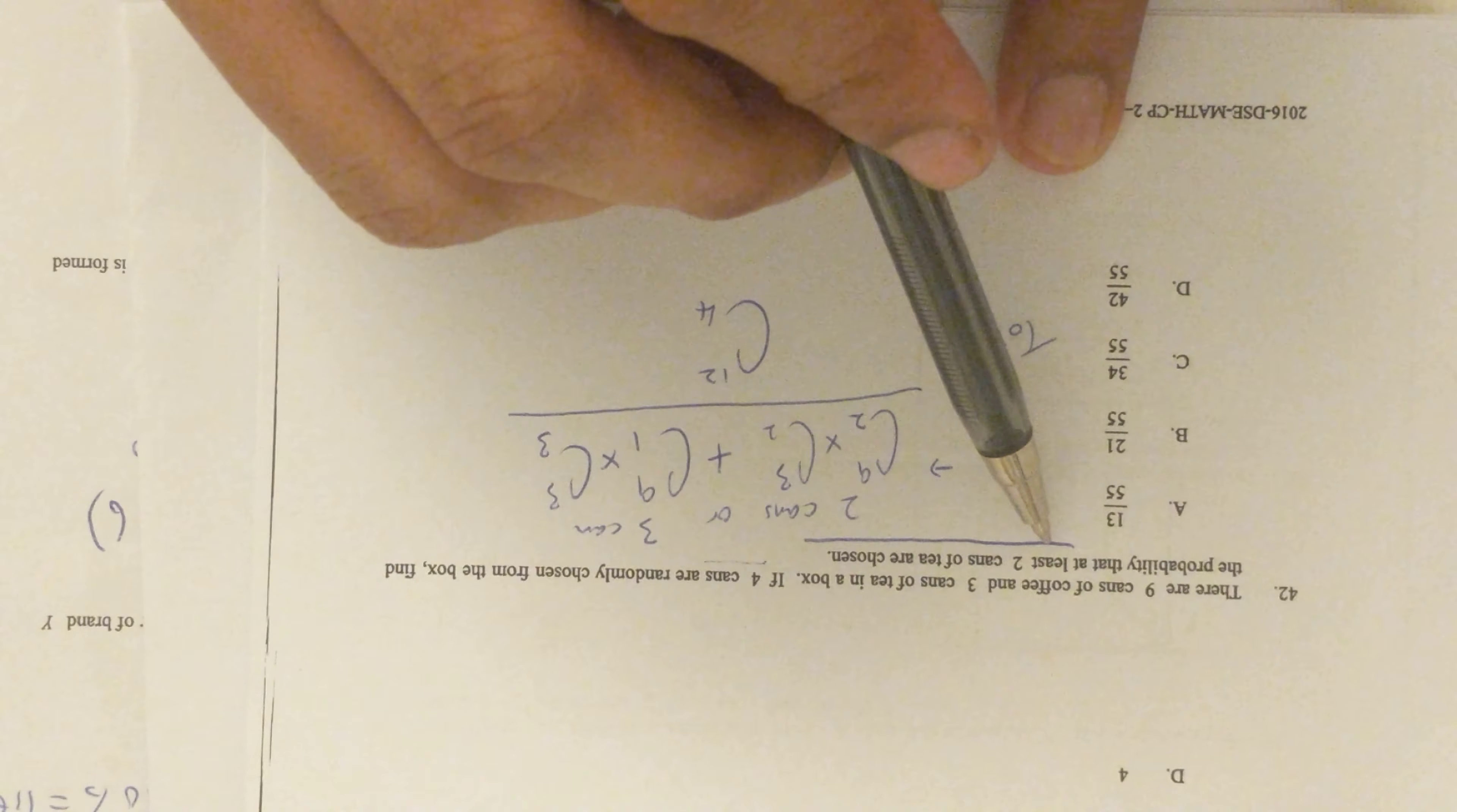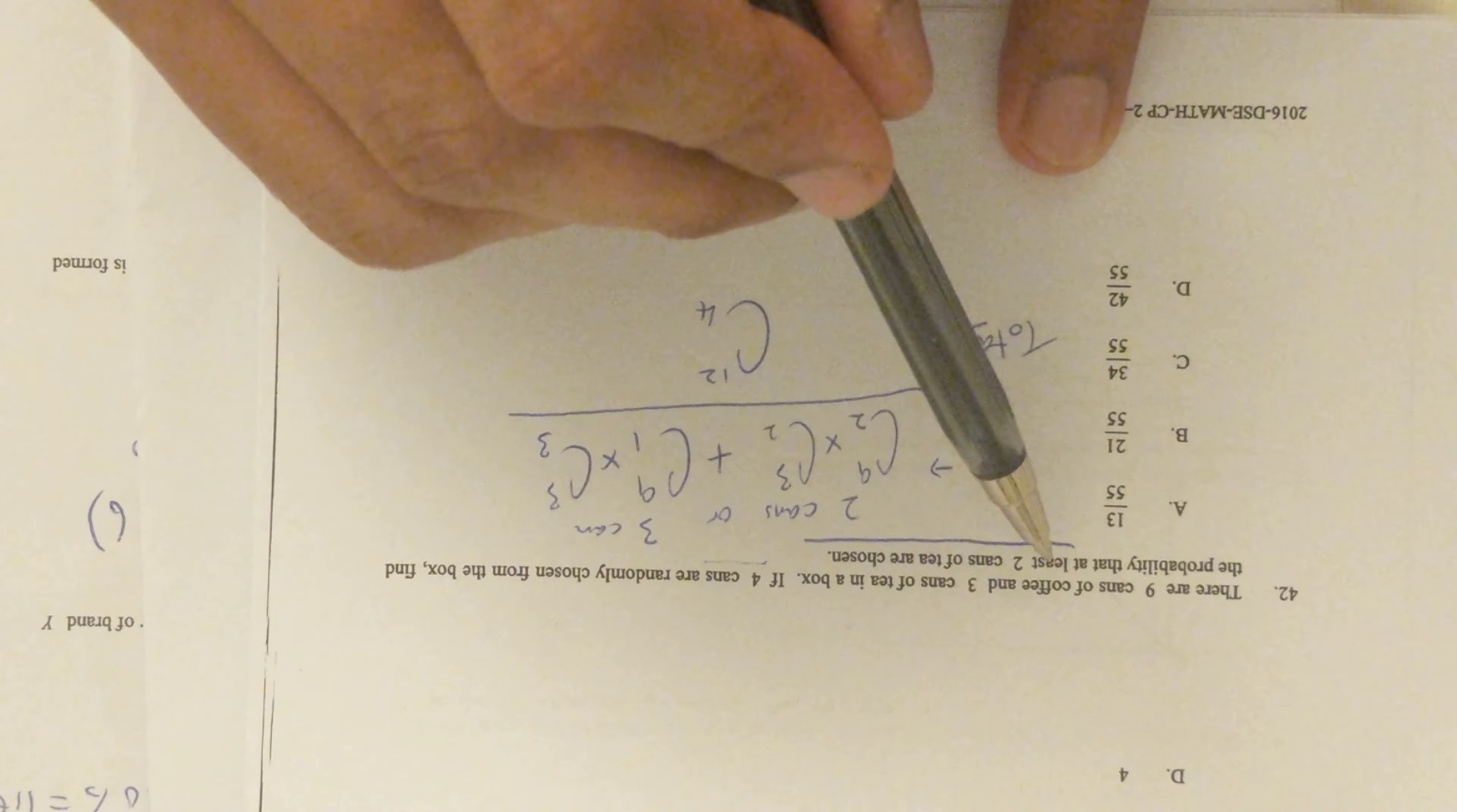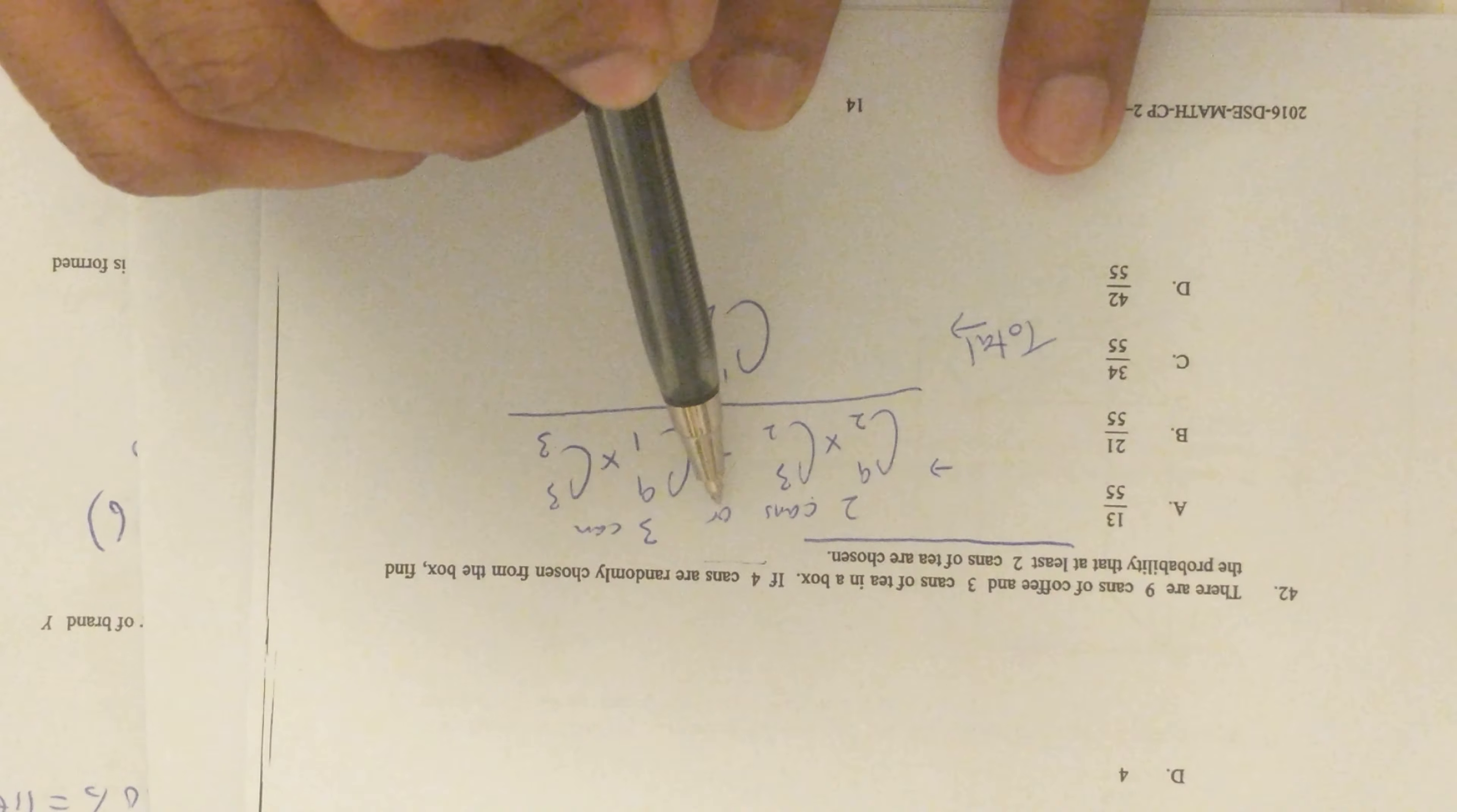Since there's only three cans of tea, we need to think about the probability of getting at least two, which means they can be two or they can be three. Remember, when we're doing probability, 'or' means plus.